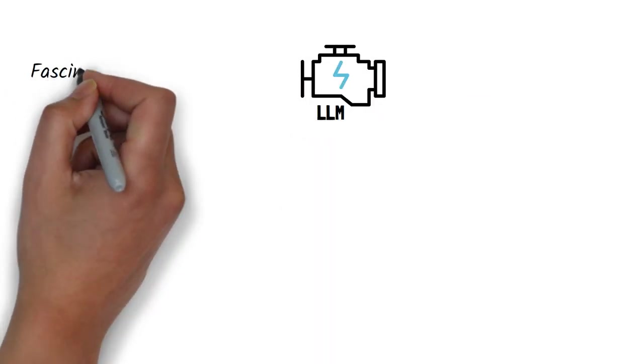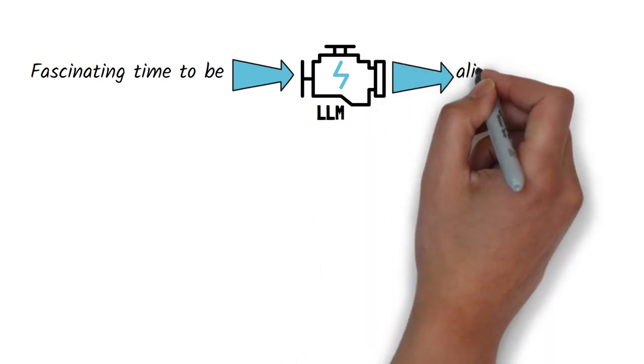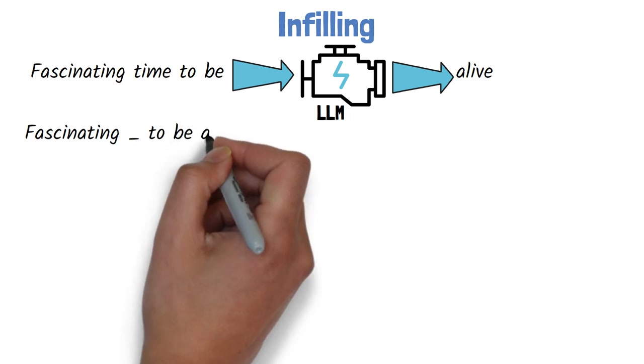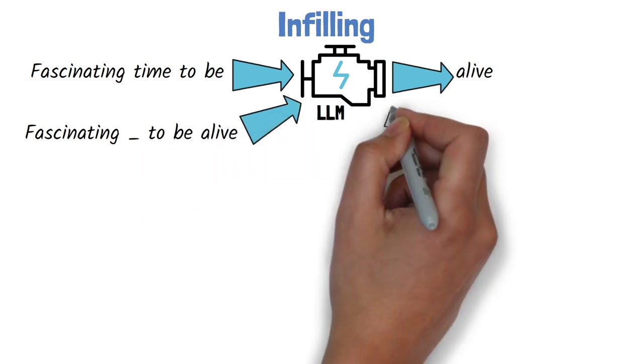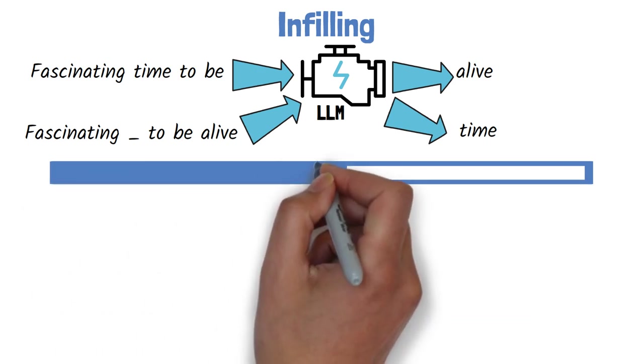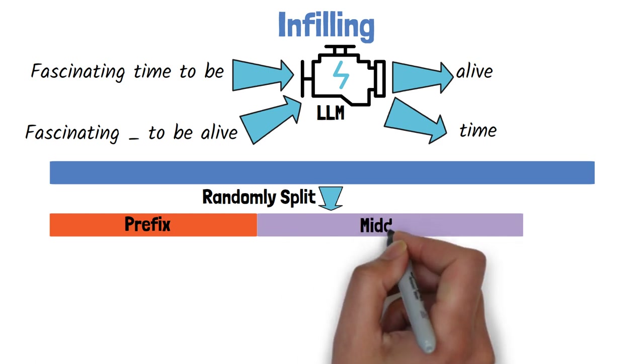Language models are only trained to predict the next token in a sequence, where they get a prompt and yield the most probable next token. With in-filling, the model can get a surrounding context and predict the missing information. So how do we train the model to support in-filling? Given an input sequence, we randomly split it into a prefix, a middle part, and a suffix.